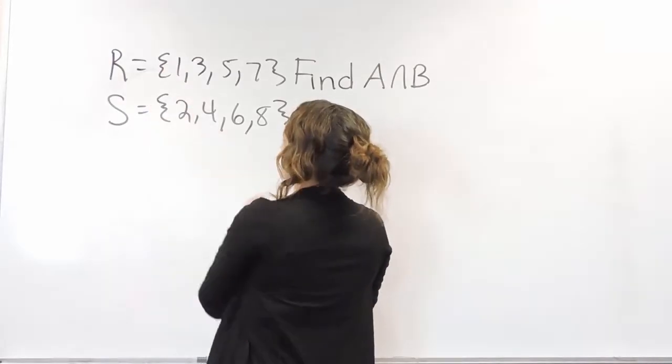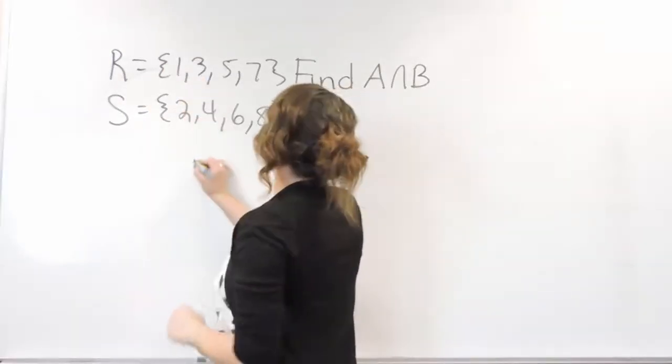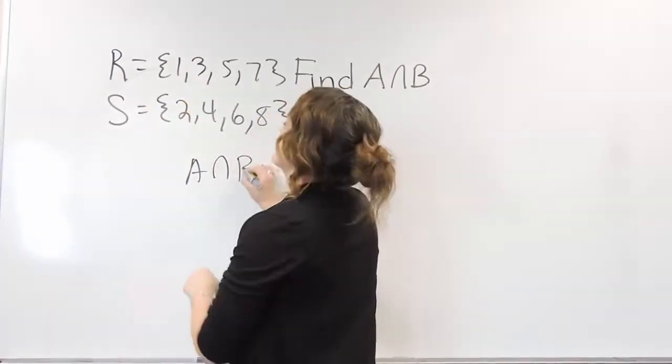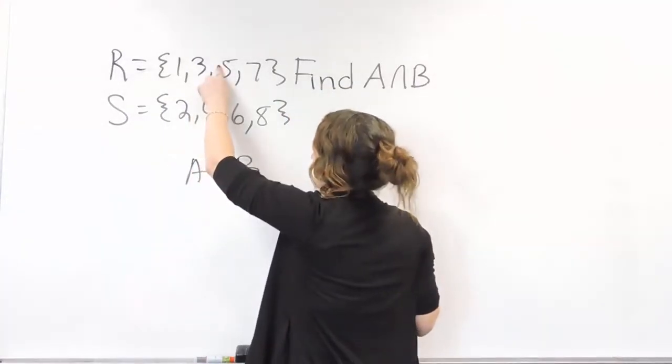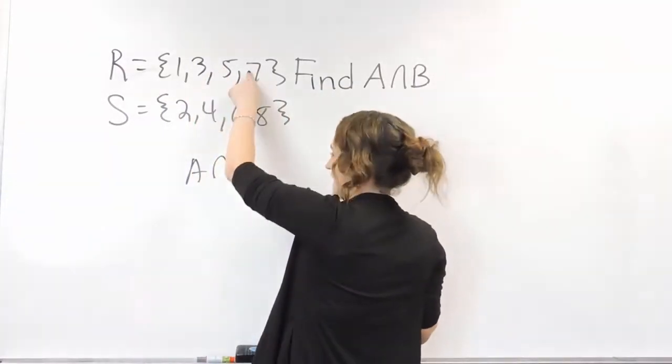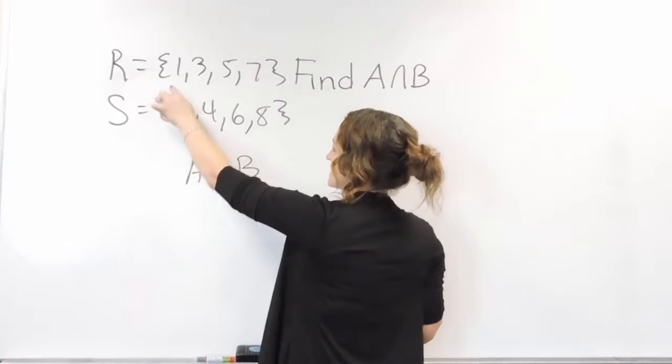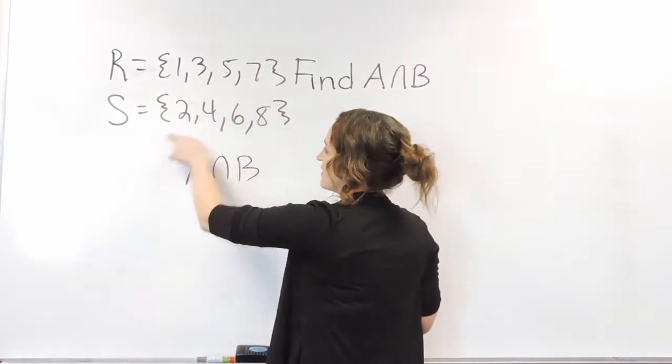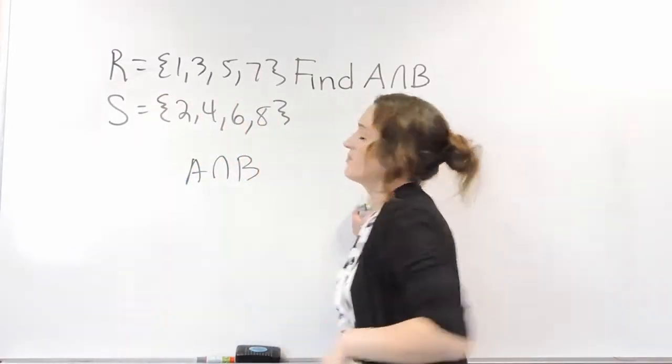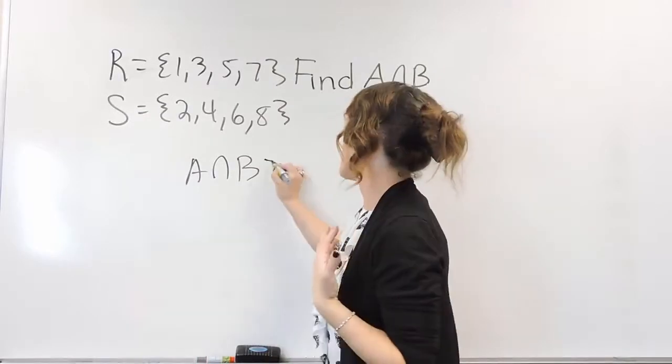I have a one here, don't have it there. I have a three there, but I don't have that here. I have a five, not here. Seven, not here. Notice everything in R is an odd number. Everything in S is an even number. So they're not going to share anything.